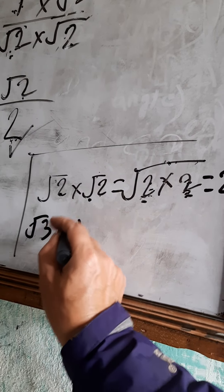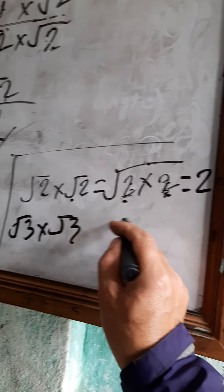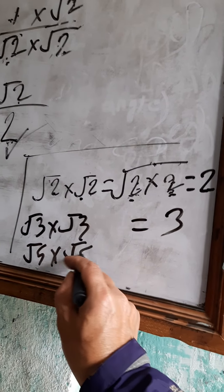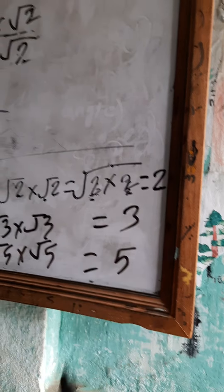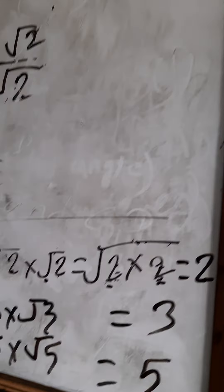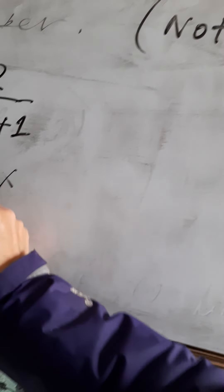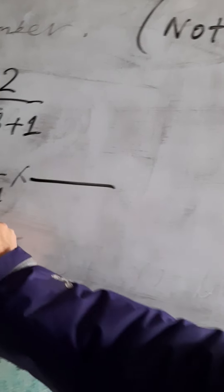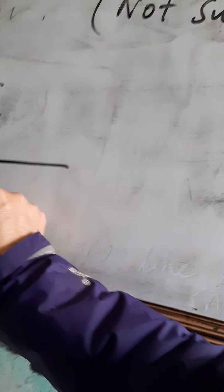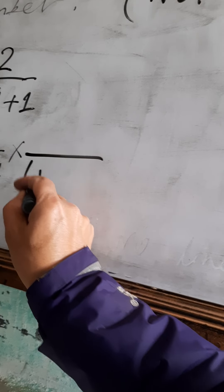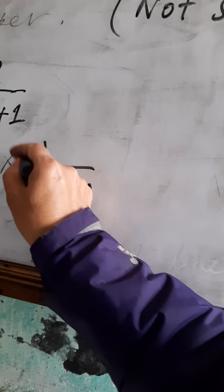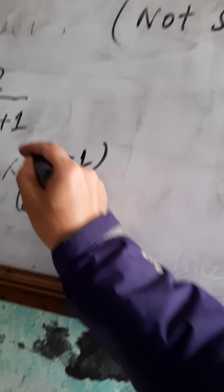What's going on from root 2? How do you write root 5? How do you write root 3 plus 1? How do you write root 3 minus 1?